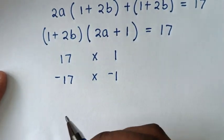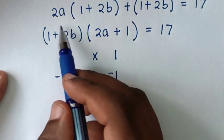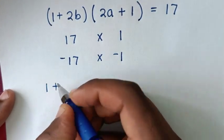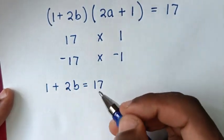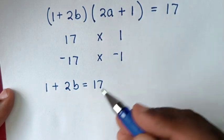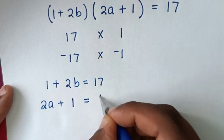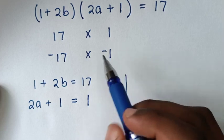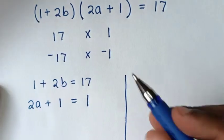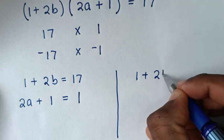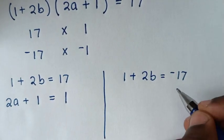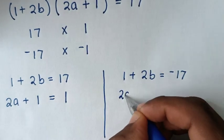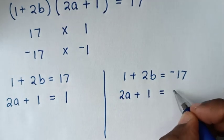For the first solution, when it is positive integer: 1 plus 2b is equal to 17, and 2a plus 1 is equal to 1. For the second solution, when it is negative integer: 1 plus 2b is equal to negative 17, and 2a plus 1 is equal to negative 1.